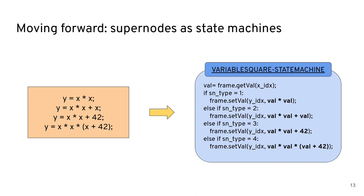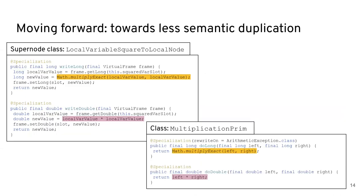Not to mention that super nodes, by design, introduce semantic duplication into the system. Because if you look at a local variable square node again, y equals x times x, for its method that actually writes to a double value,